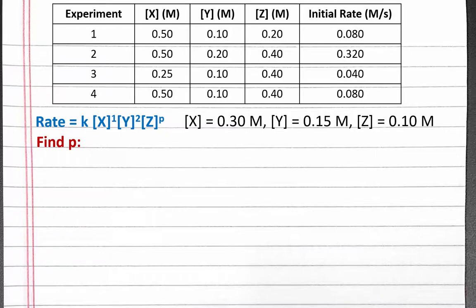Next, we'll find p. If we look through our experiments, in experiments 1 and 4, the only initial concentration that changes is the concentration of Z. When we doubled the concentration of Z, our initial rate did not change. This means our rate does not depend on Z, and p must equal 0.